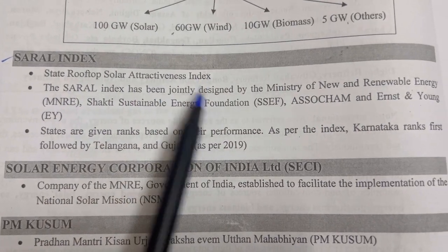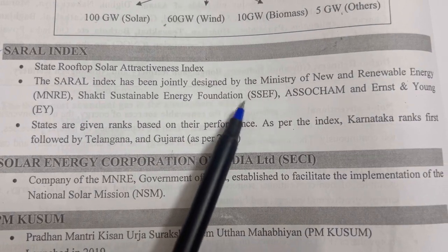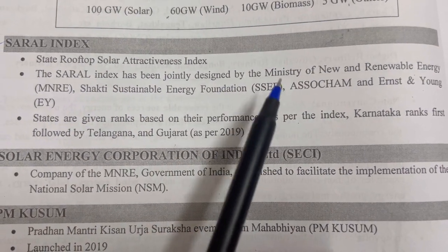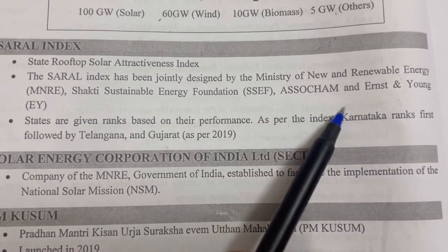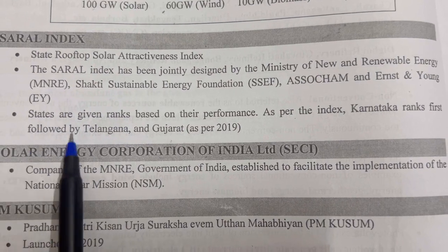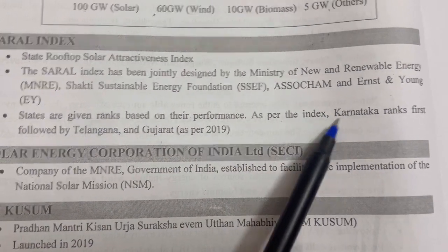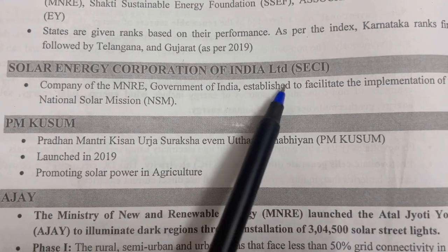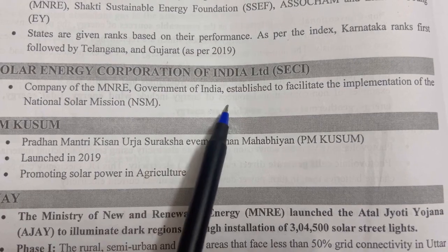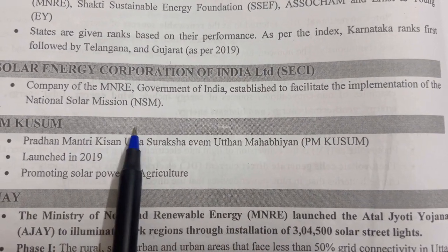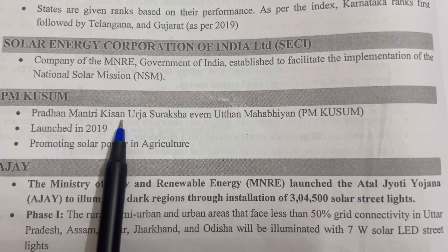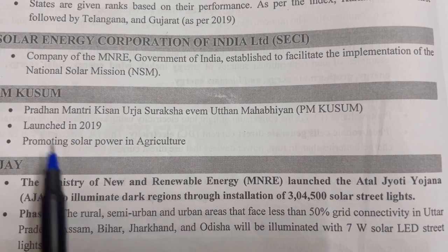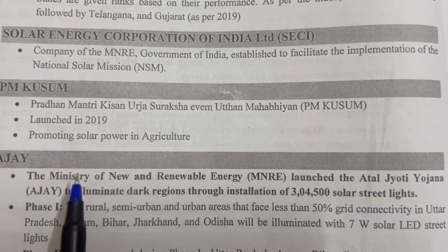The SARAL (State Rooftop Solar Attractiveness Index) has been jointly designed by the Ministry of New and Renewable Energy (MNRE), Shakti Sustainable Energy Foundation (SSEF), AECOM, and Ernst & Young (EY). States are ranked based on performance; Karnataka ranks first, followed by Telangana and Gujarat as of 2019. Solar Energy Corporation of India (SECI), a company under MNRE, was established to facilitate implementation of the National Solar Mission. PM KUSUM (Pradhan Mantri Kisan Urja Suraksha evam Uttam Mahabhiyan) was launched in 2019 to promote solar power in the agriculture sector.